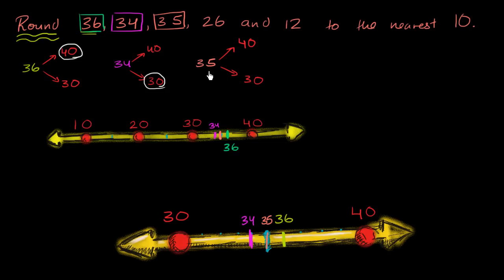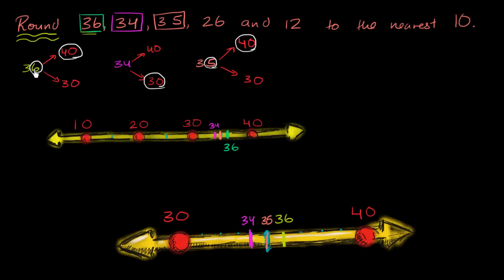This one is a little bit of a conundrum, because 35 is five away from both 40 and 30. So the mathematical community has decided: if you have a five or more in the ones place, you round up. This is just a rule. Five or more in the ones place, you round up. So 35 rounds up to 40. A six in the ones place is five or more, so you round up. A four in the ones place is not five or greater, so you round down.